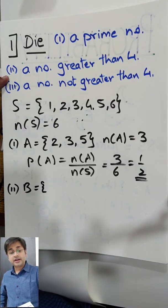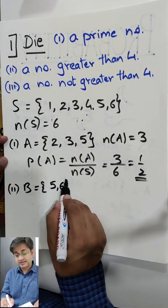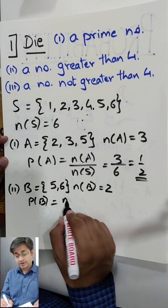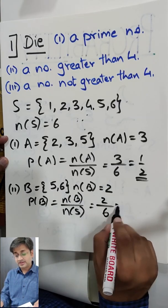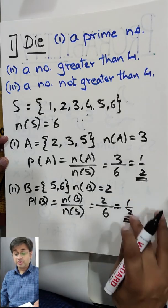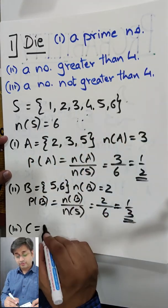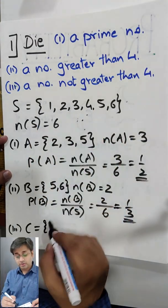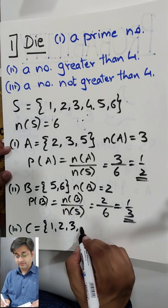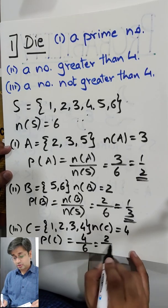Event B: a number greater than 4. Not 4 — greater than 4. So, 5 and 6. Therefore number of B is equal to 2. Probability of B is 2 by 6, which is 1 by 3. Can you see the denominator is always the bigger number? That means the value is less than 1, but never negative. Event C: a number not greater than 4. Should I include 4? Yes, because I said not greater than 4 — 4 is absolutely fine. So number of C is equal to 4. Probability of C is 4 by 6, which is 2 by 3.